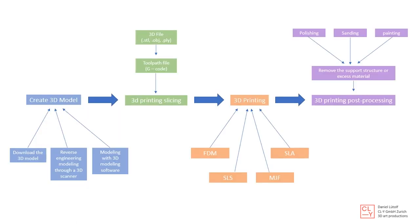All the 3D objects are based on four crucial steps in the 3D production line. In the first step, we create the 3D model by downloading the model, reverse engineering it through a 3D scan, or building the model with 3D software. In the next step, we bring the 3D model to slicing software and translate the STL, OBJ, or PLY file to a toolpath called the G-code. The third step is the actual 3D printing, where we can choose between FDM, SLA, SLS, or MJF printers.